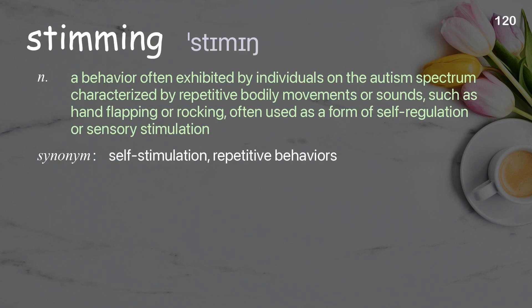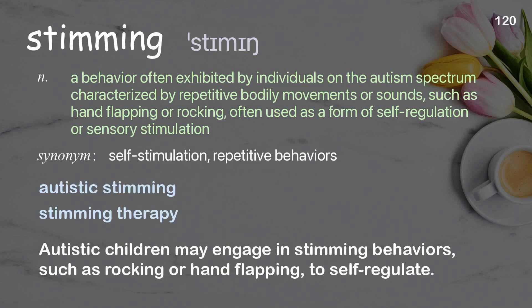Stimming: a behavior often exhibited by individuals on the autism spectrum, characterized by repetitive bodily movements or sounds such as hand flapping or rocking, often used as a form of self-regulation or sensory stimulation. Examples: autistic stimming, stimming therapy. Autistic children may engage in stimming behaviors such as rocking or hand flapping to self-regulate.